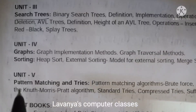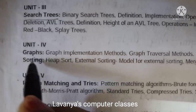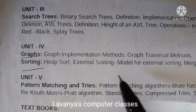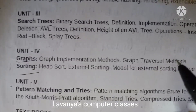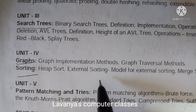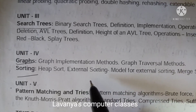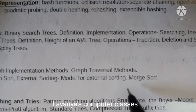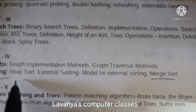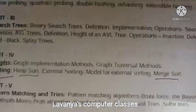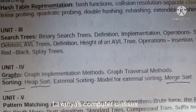Next in unit 4, there are two topics: one is graphs and second one is sortings. Graph traversal method is very important, and sorting also. In the sorting, only external sorting — that means merge sort and heap sort — are important concepts. Types of heaps and heap sort are key.